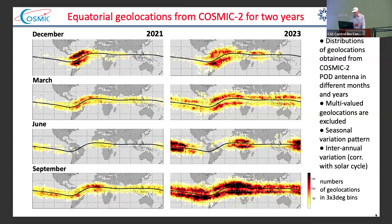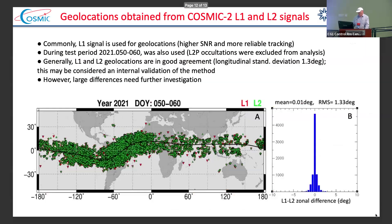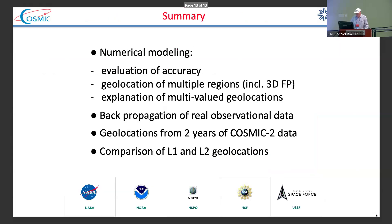This is the result of processing two years of COSMIC data. We can see that they show seasonal variability and inter-annual variability correlated with the solar cycle. More detailed plots can be seen in the poster upstairs by Rina Zakharenkova. We also did a test based on 10 days comparing L1 and L2 geolocations. They are generally in good agreement, providing a kind of internal validation of this technique which gives more confidence. On the other side, there are some outliers where geolocations differ and they need further investigation. And that's the summary.